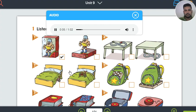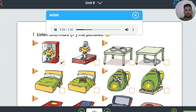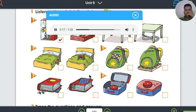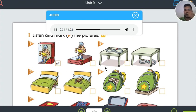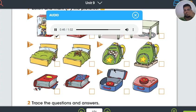Number 1. Where is the action figure? It's in the box. Number 2. Where is the bike? It's under the bed. Number 3. Where is the kite? It's on the book. Number 4. Where is the racetrack? It's under the table. Number 5. Where is the board game? It's in the school bag. Number 6. Where is the yo-yo? It's on the lunch box.